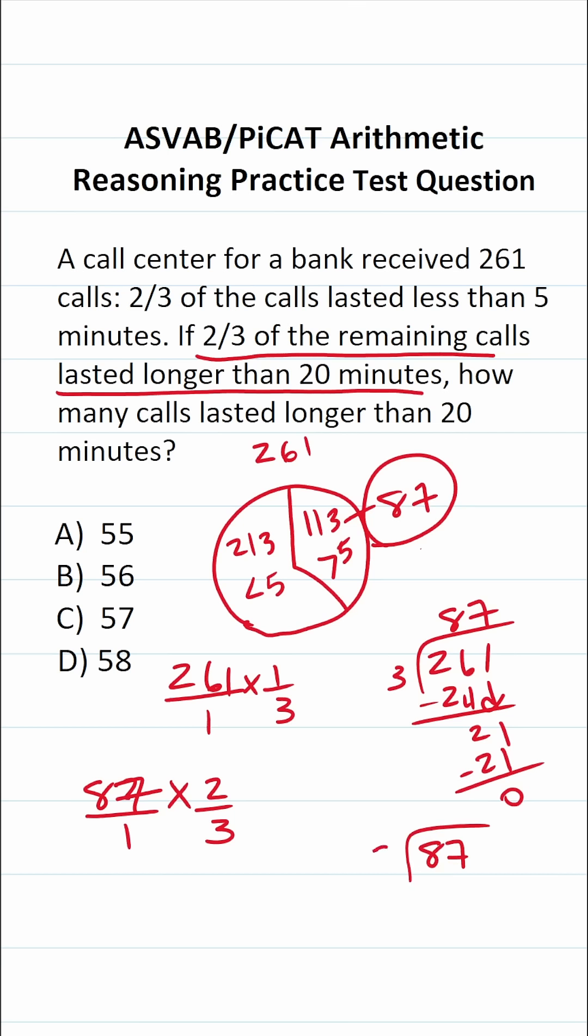That means I can cross-reduce this. I could say three goes into three one time. Three goes into 87, and let's figure that out. Three goes into eight two times without going over. Three times two is six.